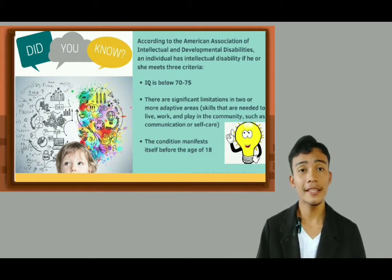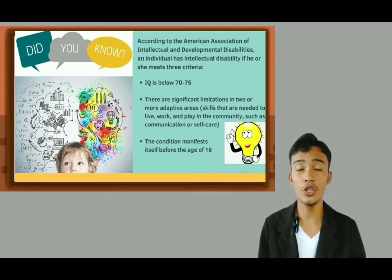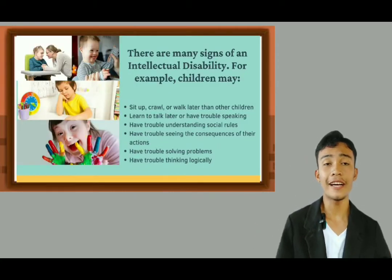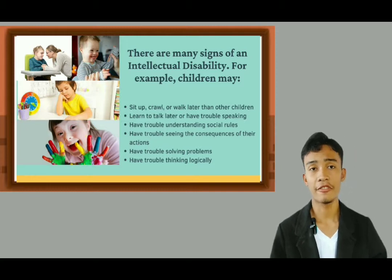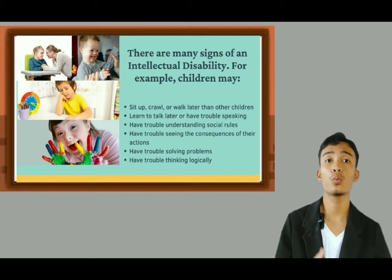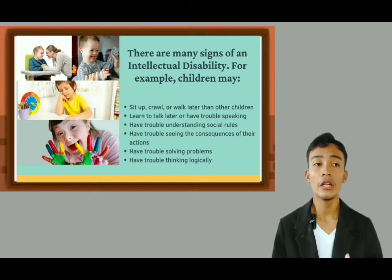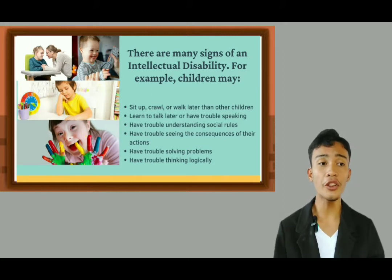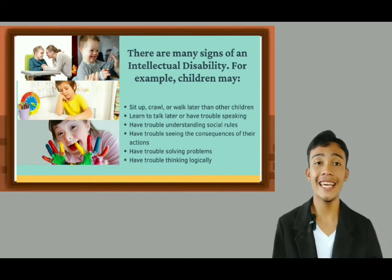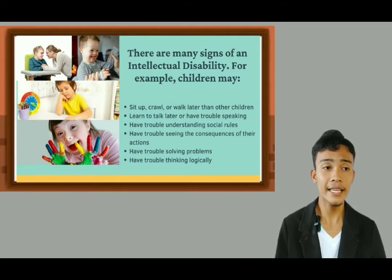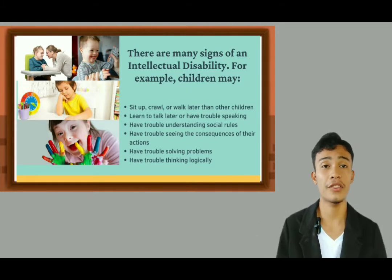Intellectual disability could happen to children when below 18 years old. There are many signs of an intellectual disability. For example, a child may first sit up, crawl, or walk later than other children. Second, learn to talk later or have trouble speaking. Another, have trouble understanding social rules, have trouble seeing the consequences of their actions, have trouble solving problems, and could have trouble thinking logically.